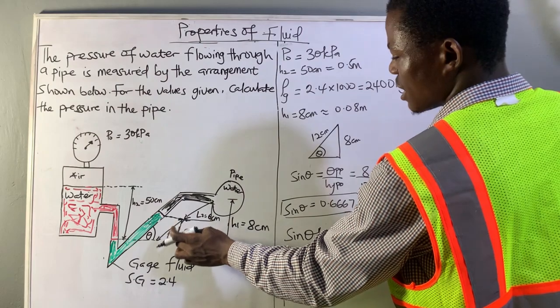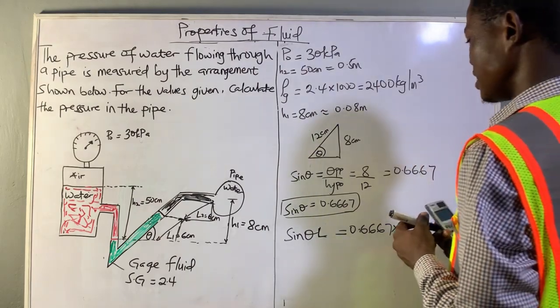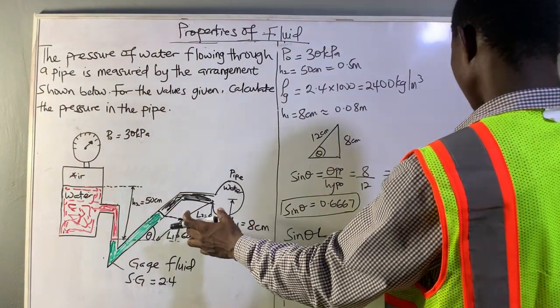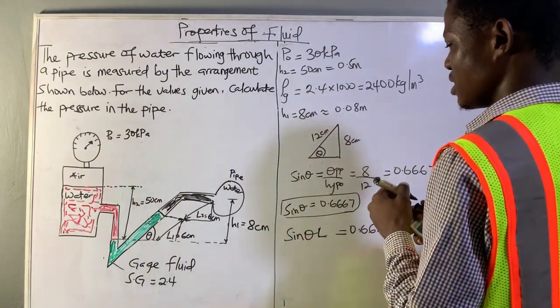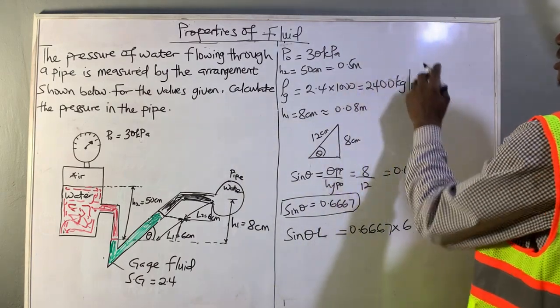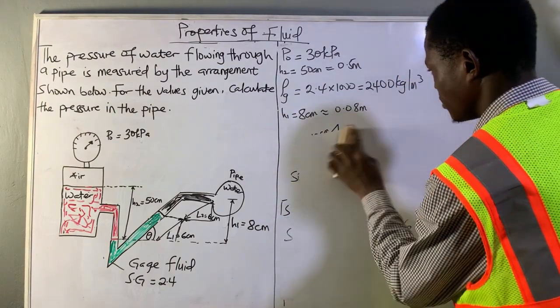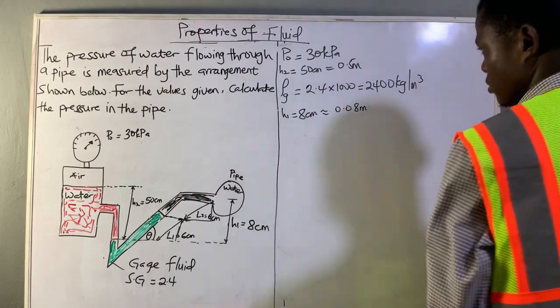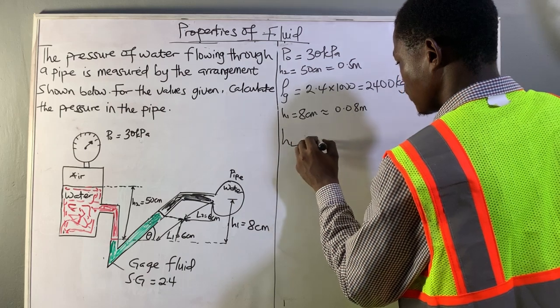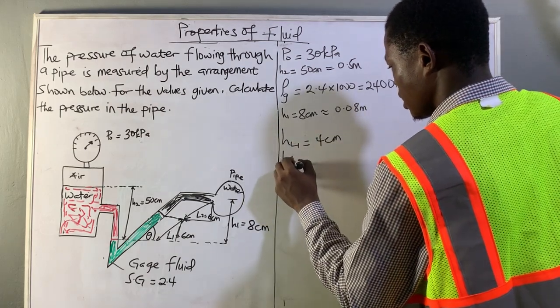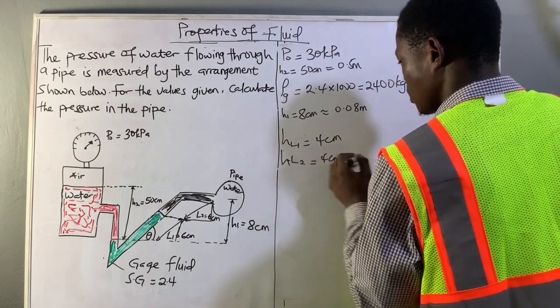That's the vertical height when it's inclined. The same applies to this, since they are all 6 centimeters. So the L1 side is 4 centimeters, the L2 side is also 4 centimeters. So that height here is 4 centimeters. Let's denote that as HL1, which is 4 cm, and HL2, which is also 4 cm.